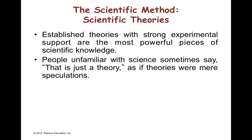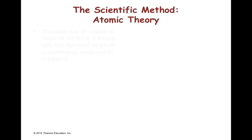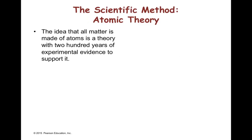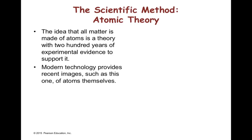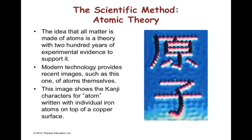Established theories with strong experimental support are the most powerful pieces of scientific knowledge. People unfamiliar with science sometimes say that it's just a theory, as if theories were mere speculations. Well-tested theories are as close to truth as we get in science. The idea that all matter is made of atoms is a theory with 200 years of experimental evidence to support it. Modern technology provides recent images such as this one of atoms themselves. This image shows the Kanji characters of four atoms written with individual iron atoms on top of a copper surface.